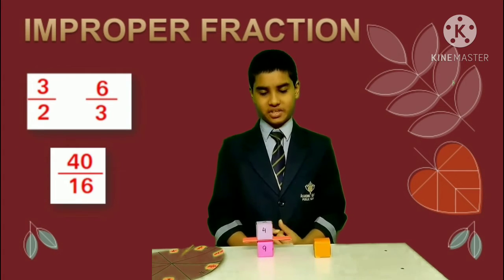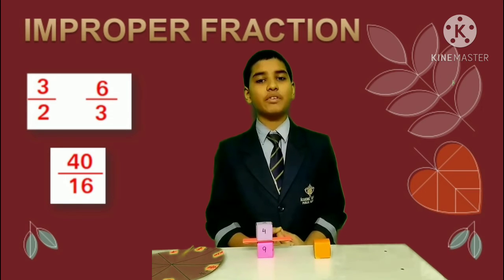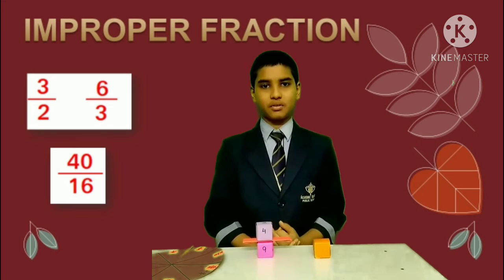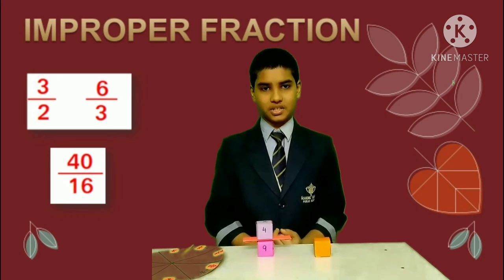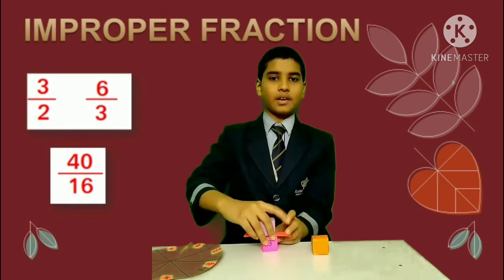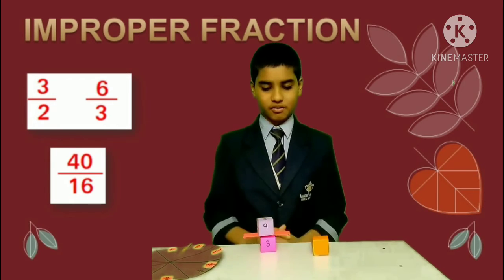Improper fractions. Fractions whose numerator value is greater than the denominator value is known as improper fractions. For example, 9 by 3. Other examples are on the screen.